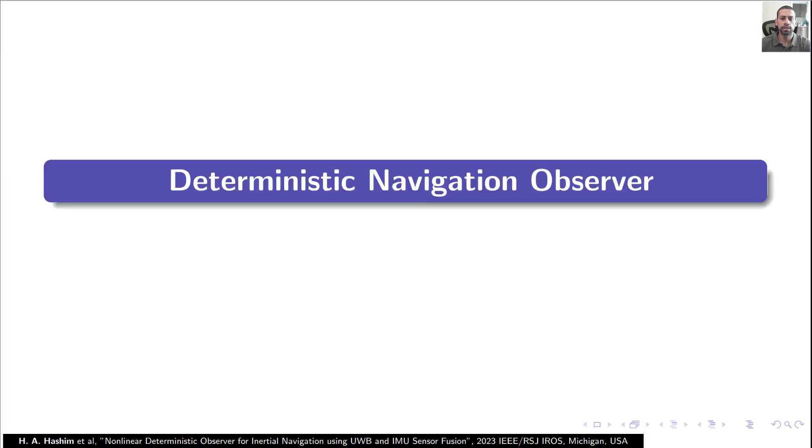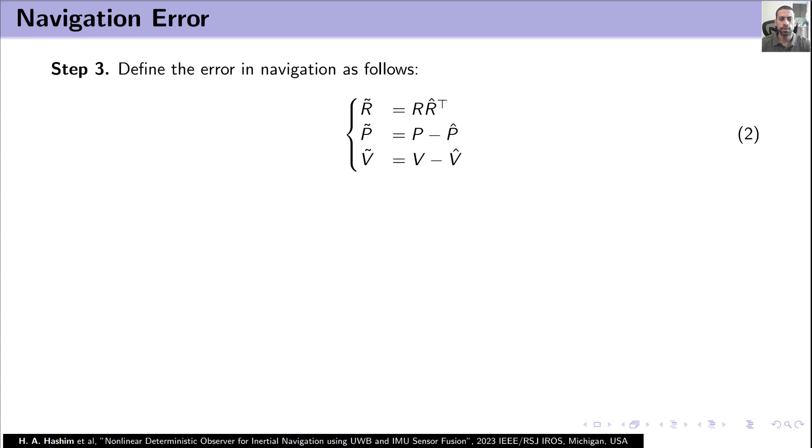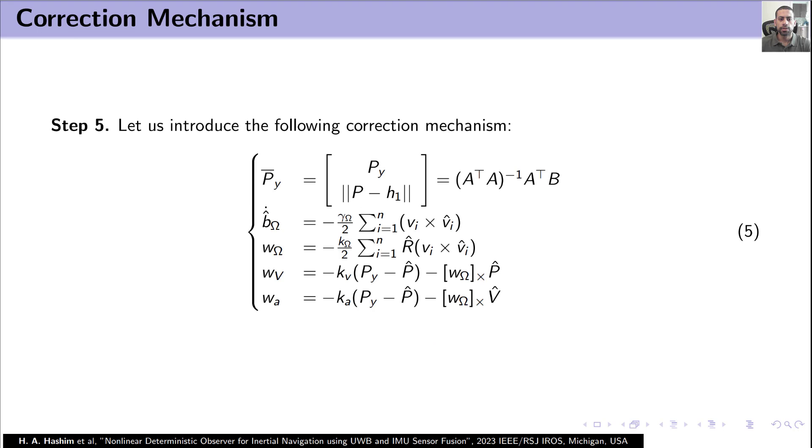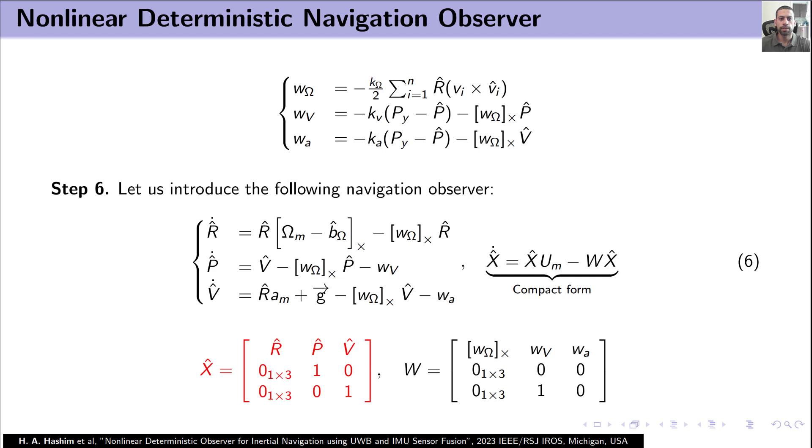Now let us move to the proposed deterministic navigation observer. Let us define the error in orientation as R-tilde equal R R hat transpose, and the error in position P-tilde is equal to P minus P hat, and the error in estimation in linear velocity is equal V minus V hat. Let us now define the following set of IMU measurements and normalization, and let us introduce the following correction mechanism. Let us now introduce the following navigation observer.